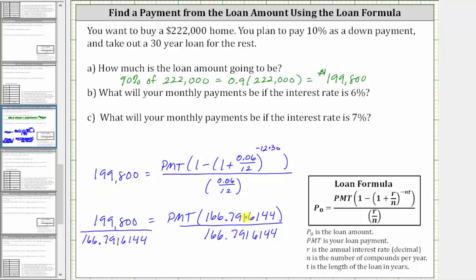Notice on the right side, this quotient is equal to one, giving us PMT times one, which of course is just PMT. So the monthly payment is going to be this quotient here, which we will round to the nearest cent.